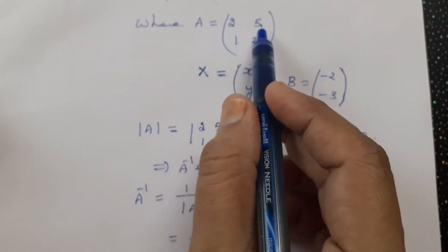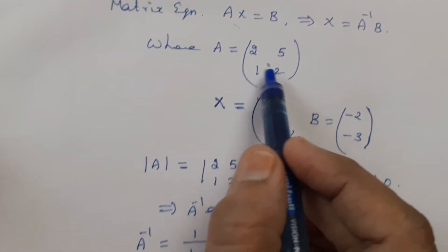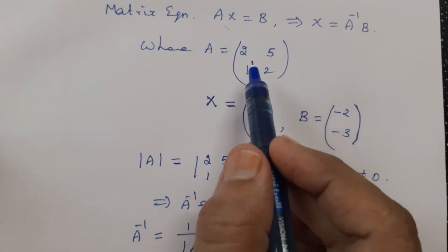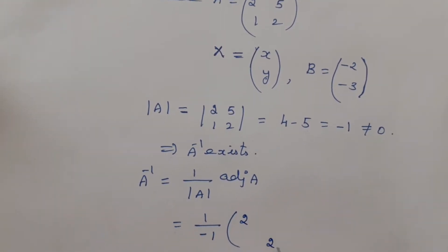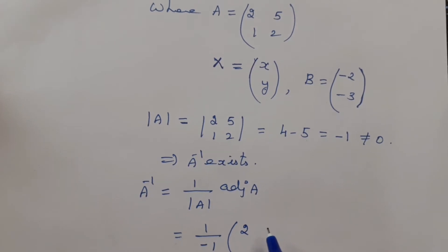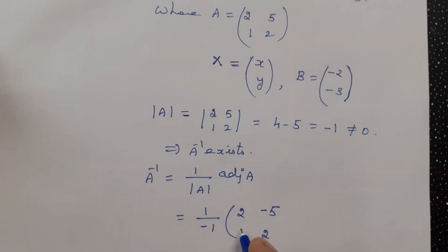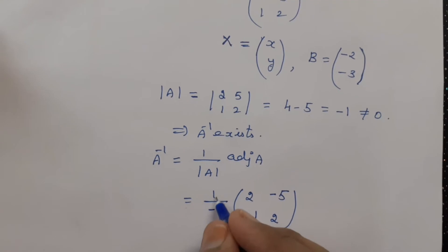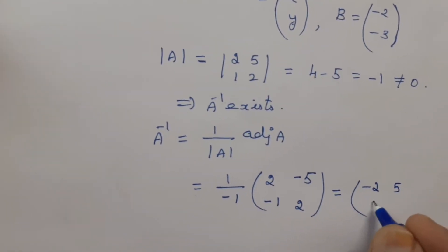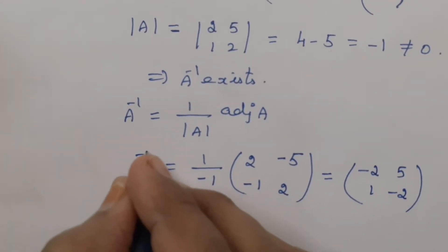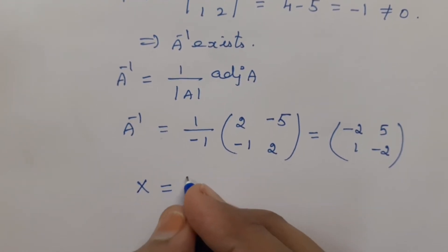We know the procedure for a 2 cross 2 matrix: for the adjoint we interchange the main diagonal entries and change the sign for the sub-diagonal entries. So writing adjoint A: after interchanging, the main diagonal entries remain 2 and 2, and in the sub-diagonals we change signs — plus 5 becomes minus 5, and plus 1 becomes minus 1. Then 1 by minus 1 times the adjoint gives us minus 1 times the matrix, so A inverse equals minus 2, 5, 1, minus 2.